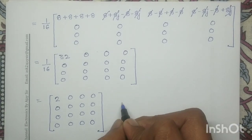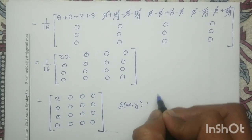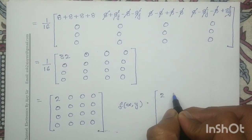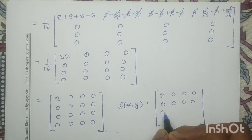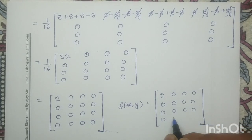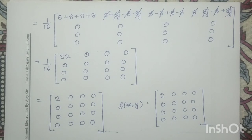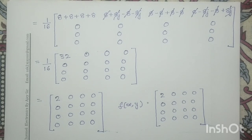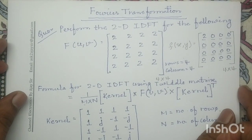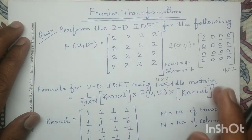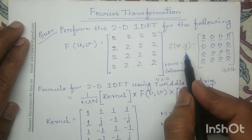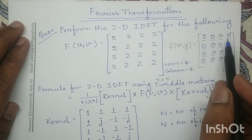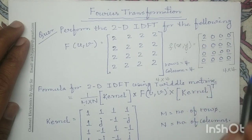So my final output f(x,y) is [2, 0, 0, 0; 0, 0, 0, 0; 0, 0, 0, 0; 0, 0, 0, 0]. For the given input sequence F(u,v), we have computed its inverse discrete Fourier transformation using the Twiddle matrix format and obtained f(x,y) = 2 at position (0,0) and 0 elsewhere. Thank you.